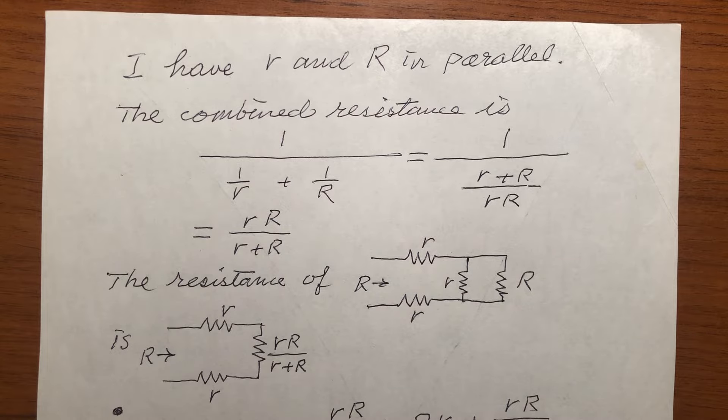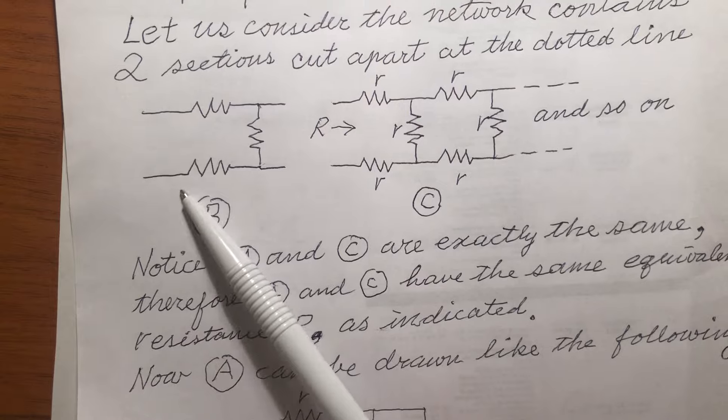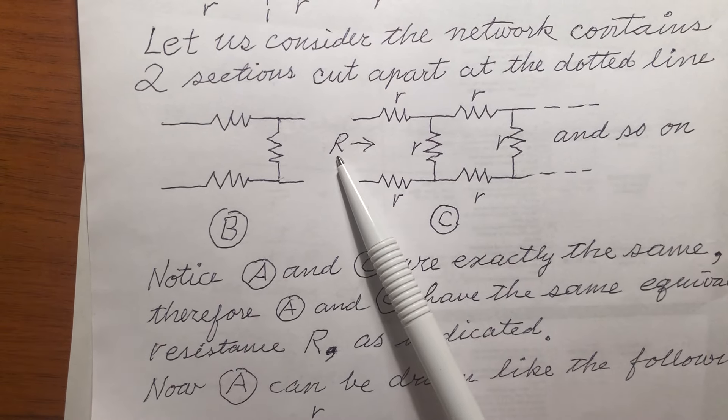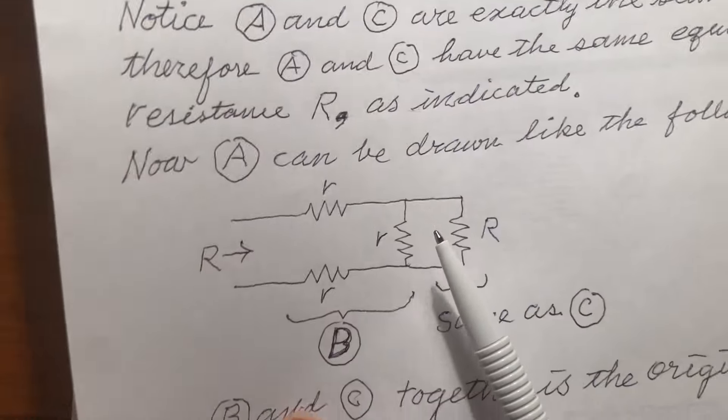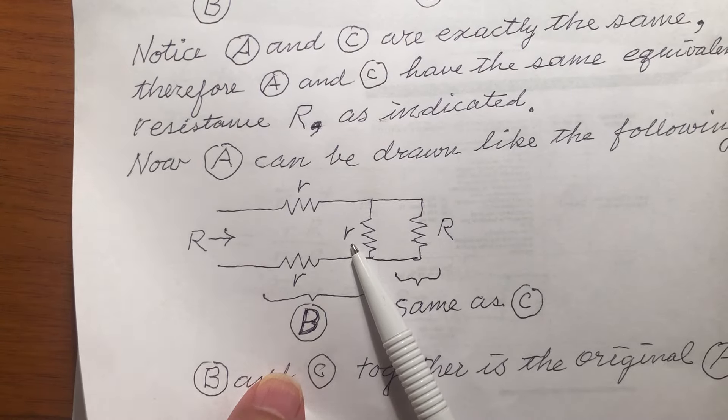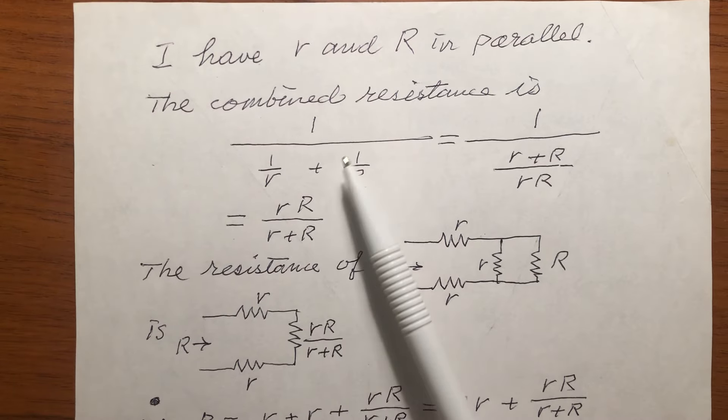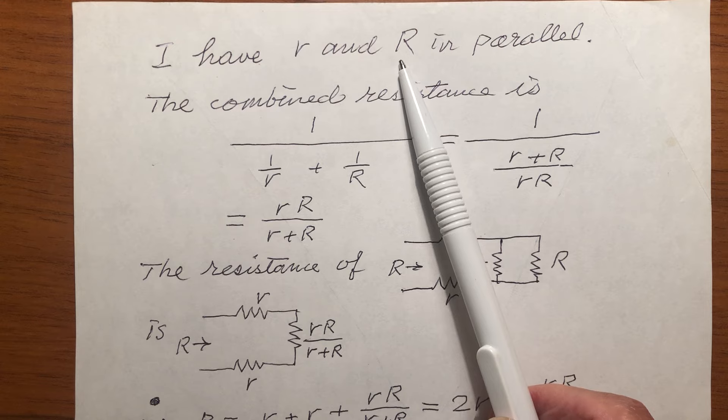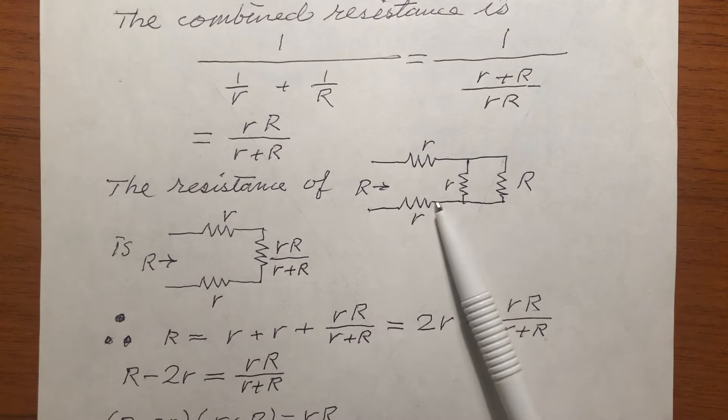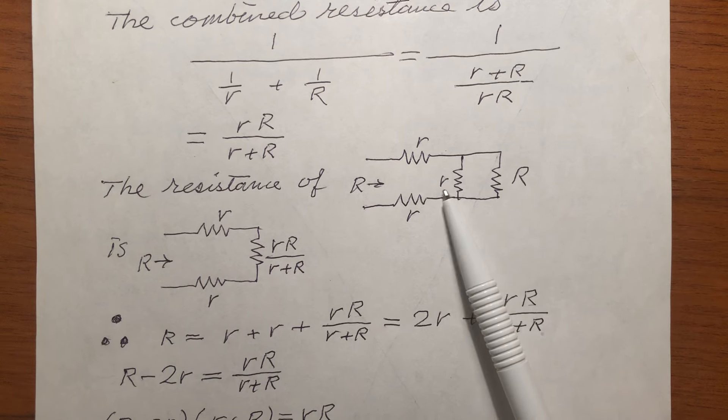Therefore, when we connect B to C, this R is connected in parallel with small r. And we worked out when small r and capital R in parallel, this is the equivalent resistance. So, this and this in parallel is this.